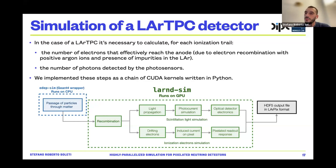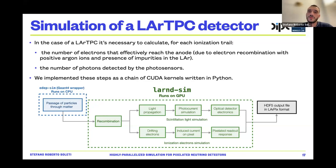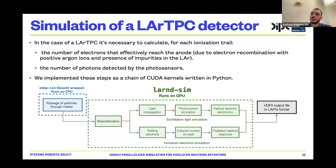The input to our simulation comes from software that simulates particle interactions in the detector medium. In particle physics, the de facto standard for this is called Geant4, and we use a Geant4 wrapper for this purpose. This runs entirely on the CPU, and we use its output as input for our GPU-optimized code. We then produce an HDF5 output file in a special format that matches the format we will use for real data.